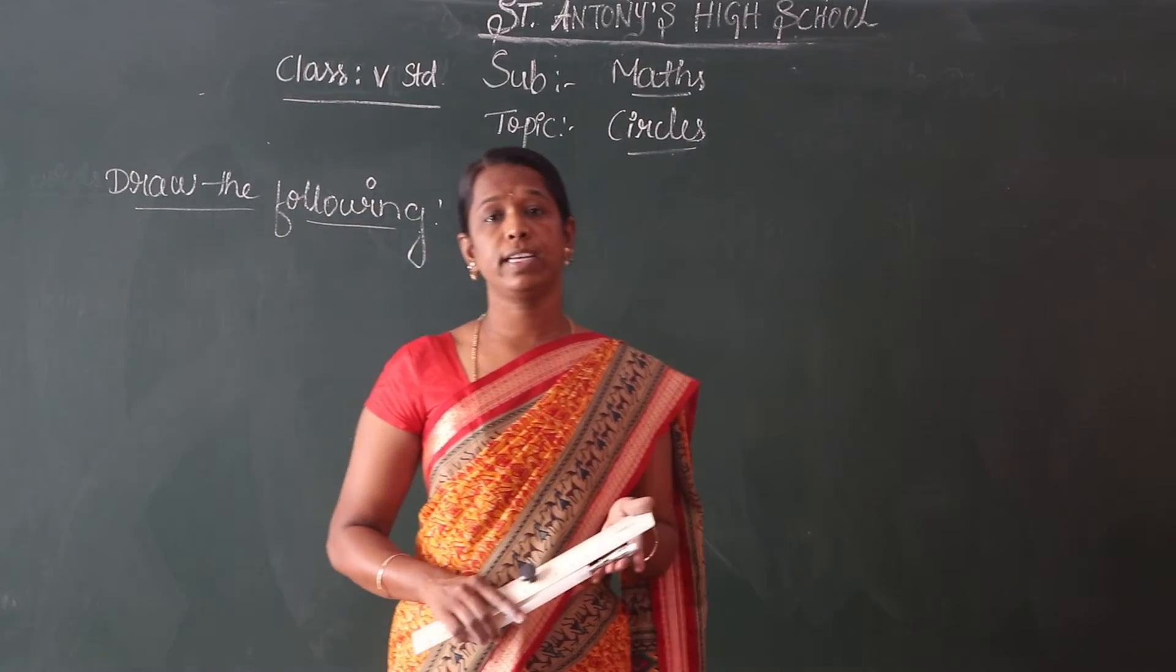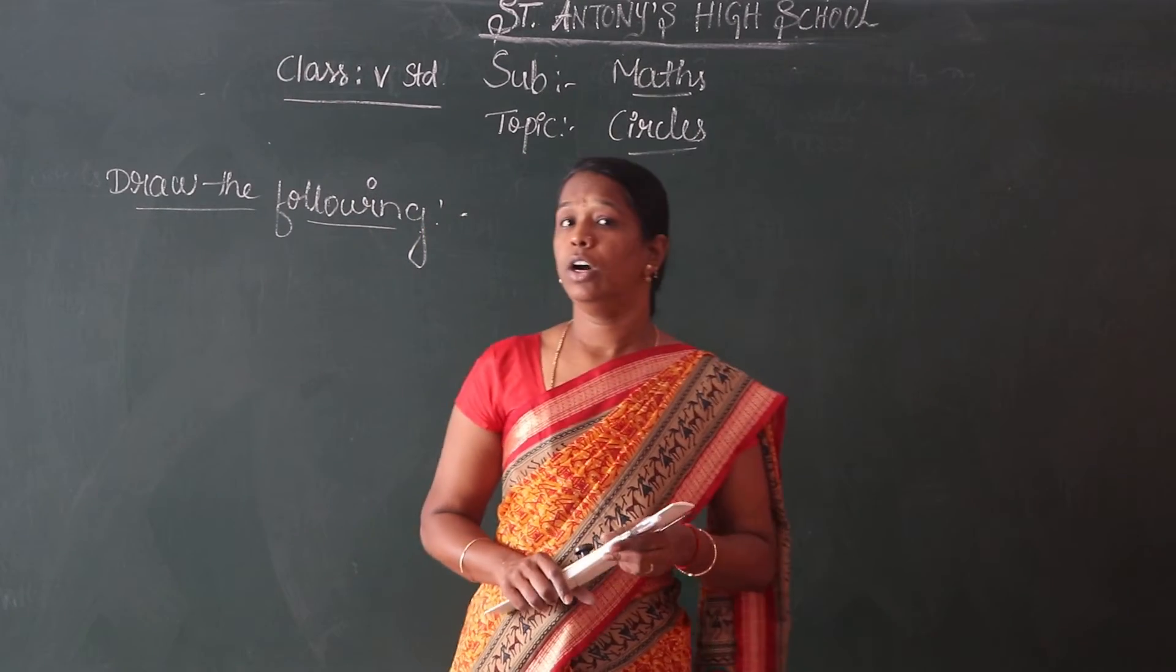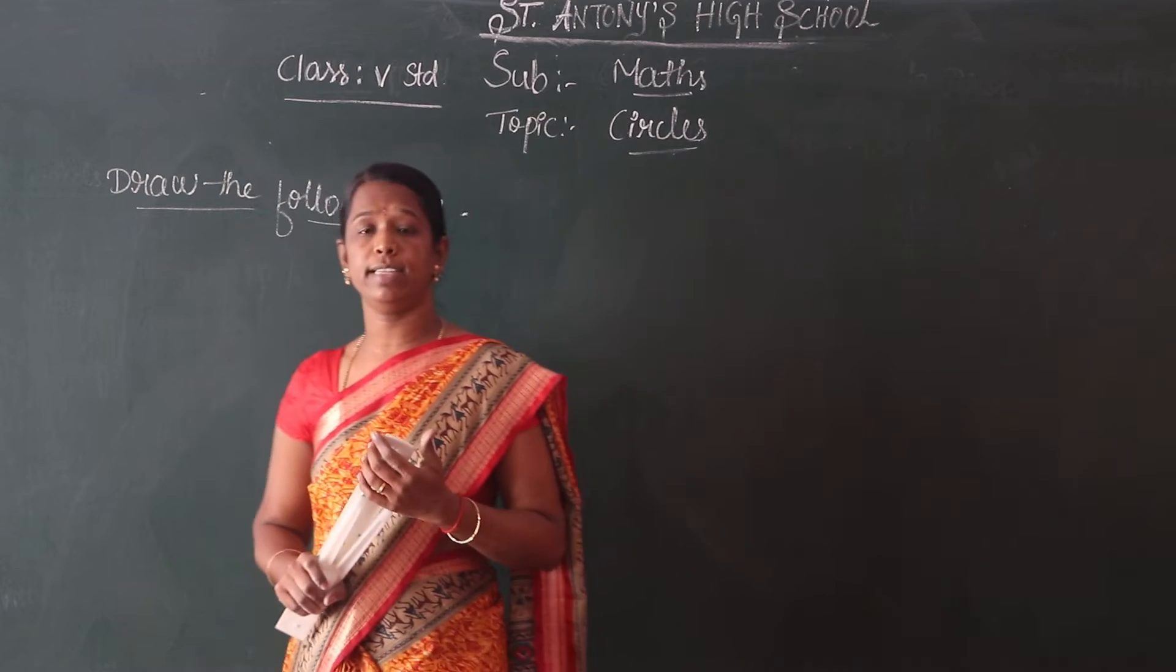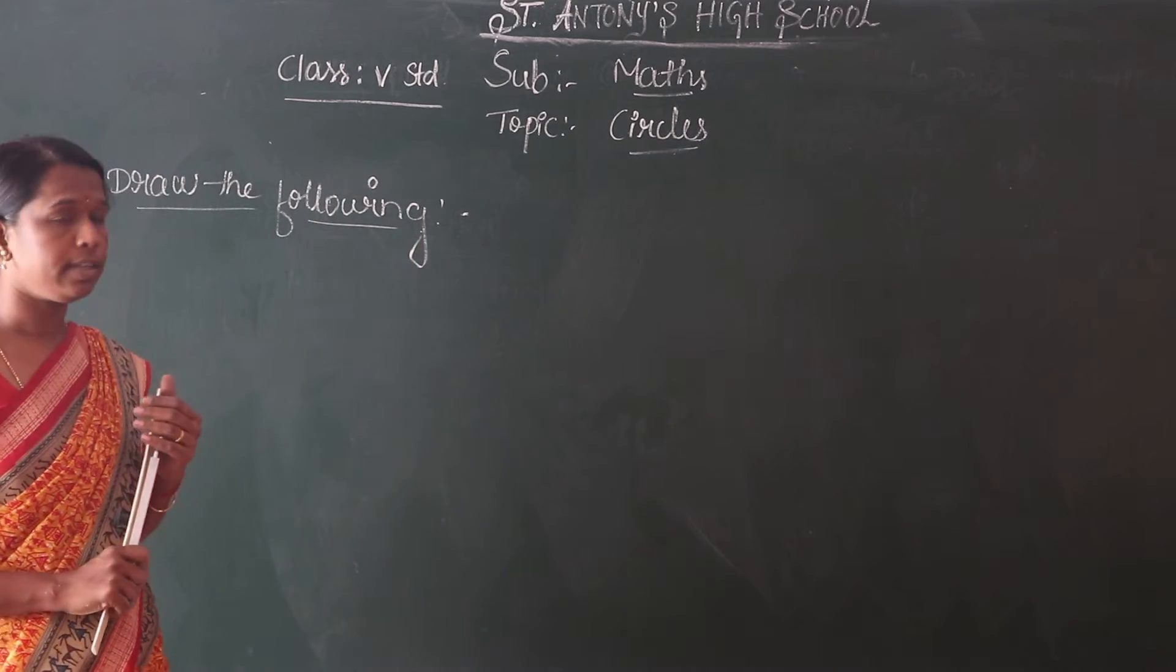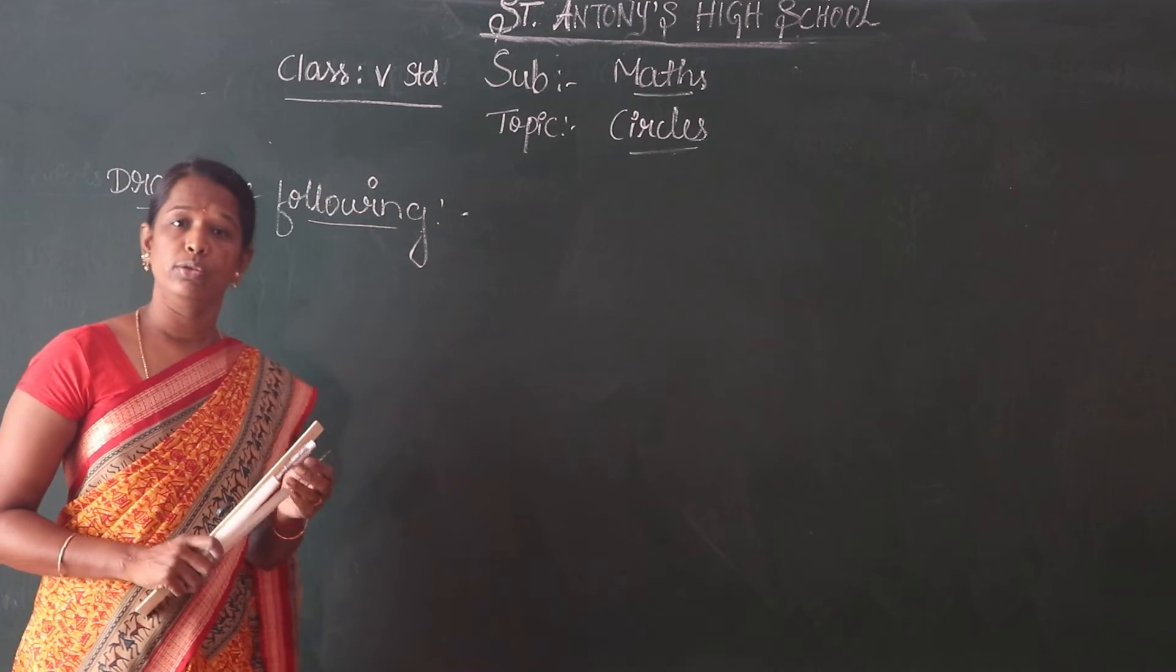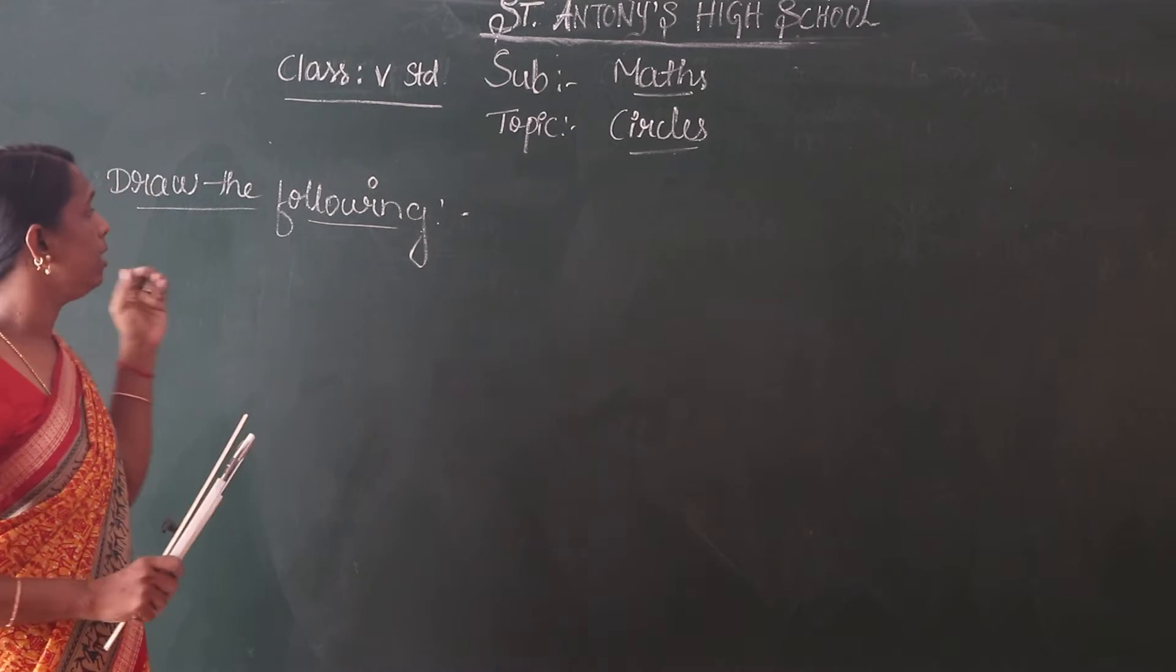Children, last class we discussed about the parts of the circle. Parts of the circle: radius, diameter, chord, segment, sector, arc, and circumference of the circles. So we know the definitions of these parts of the circle.